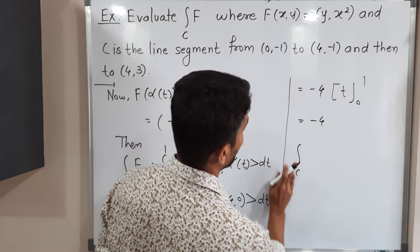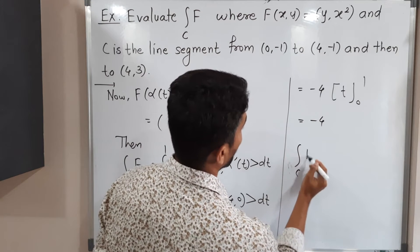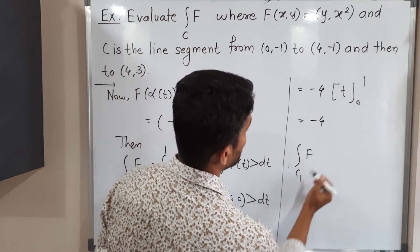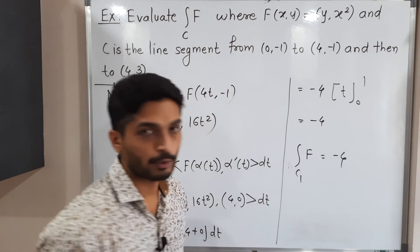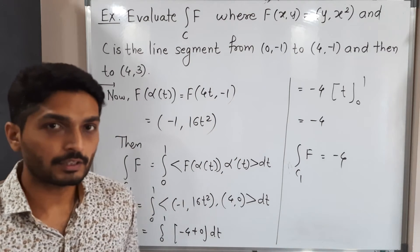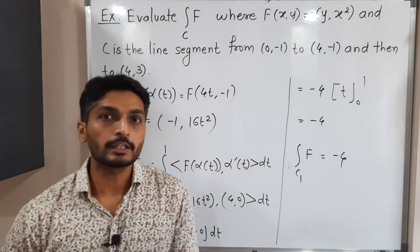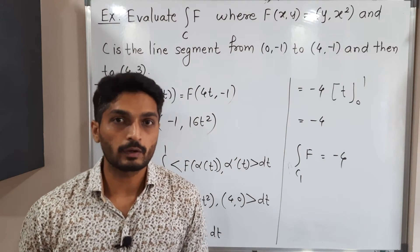Evaluating: 1 minus 0 = 1, so the integral of f over C1 equals -4.